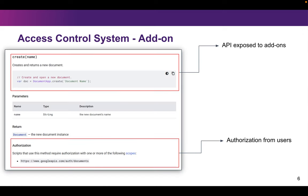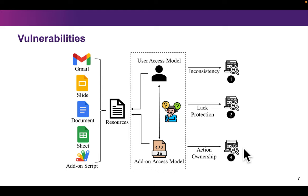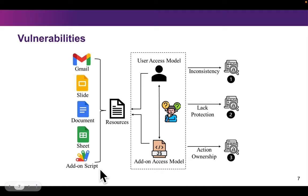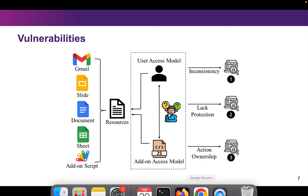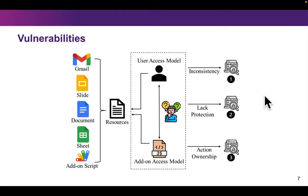Besides the access control system designed for users, the platform also supports an access control system designed for add-ons. Add-ons can use the exposed APIs to perform actions on users' resources, and they must gain authorization beforehand. We have identified three types of vulnerabilities currently existing in the platform. First, the user access model and the add-on access model are inconsistent, leading to vulnerability 1. Second, sensitive data like add-on scripts or code persists in certain conditions, leading to vulnerability 2. Third, the platform does not differentiate actions made by a real user from those made by an add-on, leading to vulnerability 3.